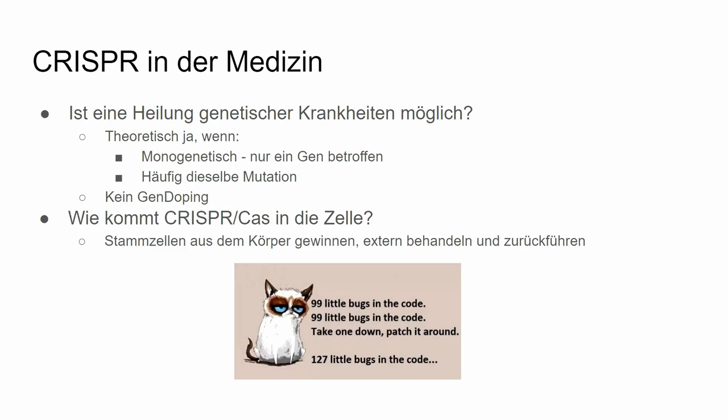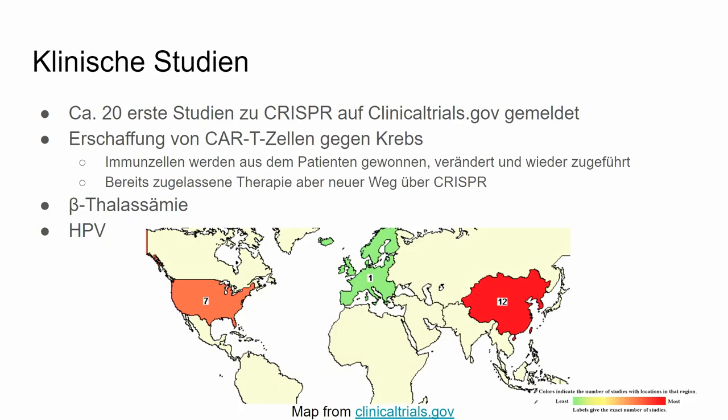The question is how do we get CRISPR-Cas into the cell. For example, we can extract stem cells, treat them externally, and put them back in. Or you can use a virus as a vector — but that's one of the greater difficulties. There are about 20 studies. One application is creation of CAR T cells against cancer — immune cells extracted from the patient, rewritten and put back in. With CRISPR this would be much faster, cheaper, and better.